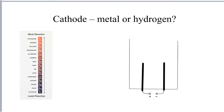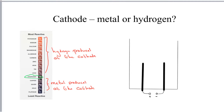At the cathode we either get a metal or we get hydrogen gas. To work out which you get, you need to look at the reactivity series of the metals. The reactivity series often has hydrogen present, even though hydrogen is a non-metal. The rule is: if the metal in the ionic compound is less reactive than hydrogen, you get the metal produced. If the metal is more reactive than hydrogen, you get hydrogen produced at the cathode. So we use the reactivity series to make the decision as to whether we get a metal or hydrogen at the cathode.